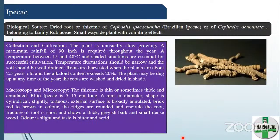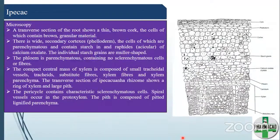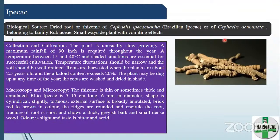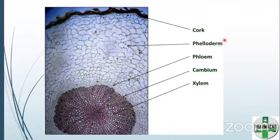Next drug is ipecac — also called ipecacuanha. It is the dried root and rhizome of Cephaelis ipecacuanha or Cephaelis acuminata belonging to family Rubiaceae. It is a small plant with vomiting effects. Microscopy: it has a rhizome with a cork cortex, presence of calcium oxalate crystals, phloem fibers, a cambium region separating phloem and xylem, and medullary rays present between the xylem vessels.